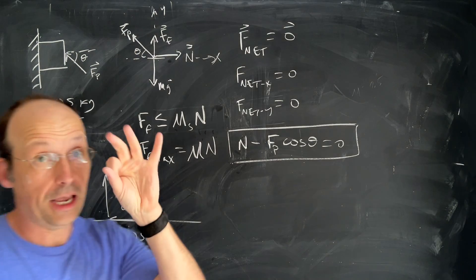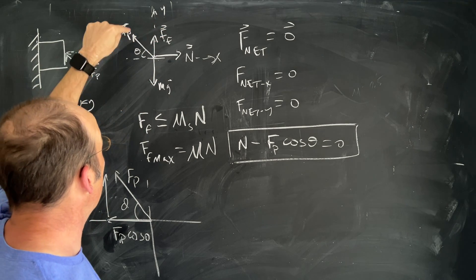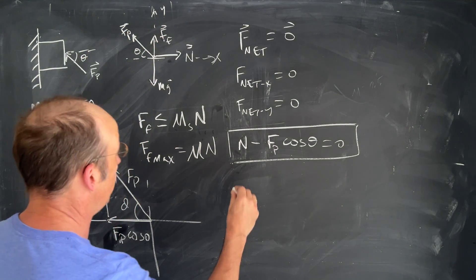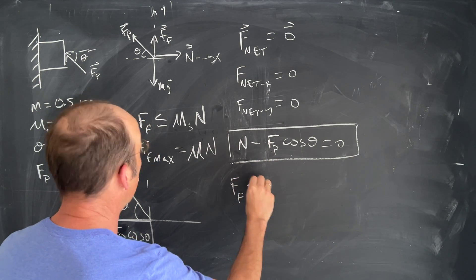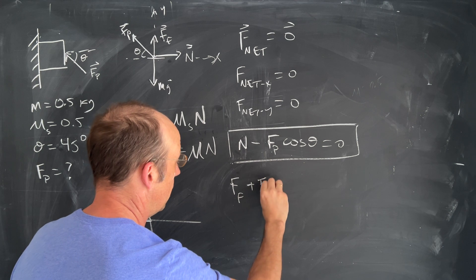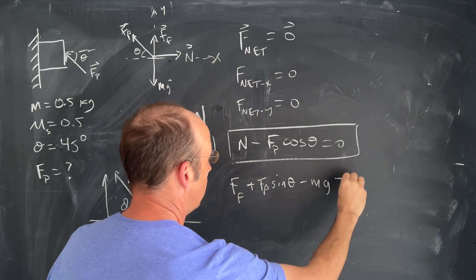Now in the y direction I have three forces right. I have the gravitational force, I have friction, and then a component of that. So let's write that down. It's going to be equal to f friction plus fp sine theta minus mg equals zero.